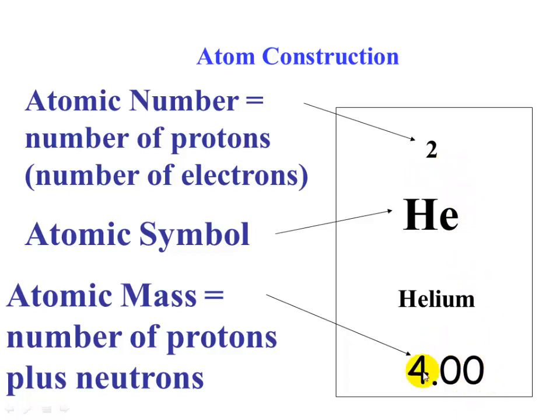Because the mass is four and we have two protons, we would need two neutrons to get to four. So the average helium atom has two protons and two neutrons to give us a mass of four.